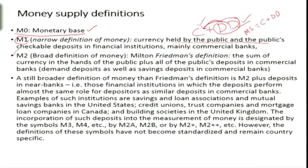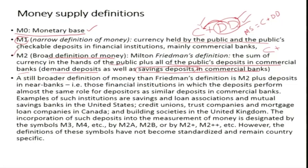The second definition is M2, a broader definition of money given by Milton Friedman — the sum of currency in the hands of the public plus all public deposits in commercial banks. This includes not only demand deposits but also savings deposits, because savings deposits these days can also be withdrawn at any time, similar to current/checkable deposits. Because savings deposits are also highly liquid, they become part of money supply under the M2 definition.